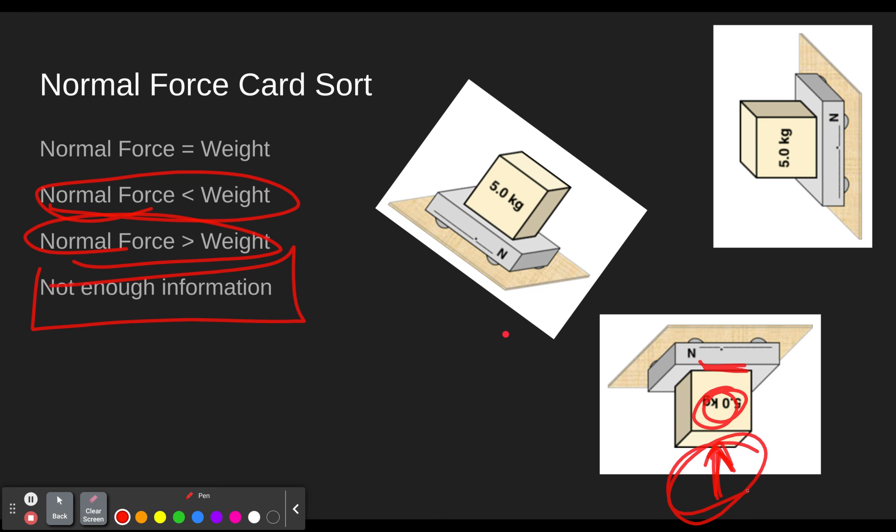If an unknown force is really affecting the weight here, then we know that it will be not enough information, unless the force is pushing the same direction as the mass, as we saw in the last slide, then we know it has to be bigger. But if we can't tell, then it'll be unknown.